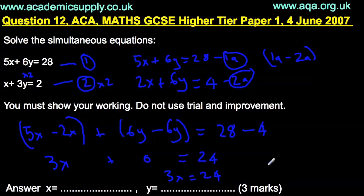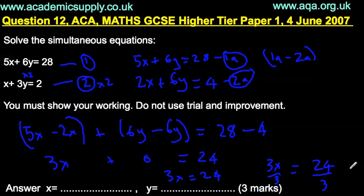Divide both sides by 3. If we divide both sides by the same number it keeps the equation consistent. 24 divided by 3 is 8, and 3 divided by 3 leaves just 1. So x equals 8.